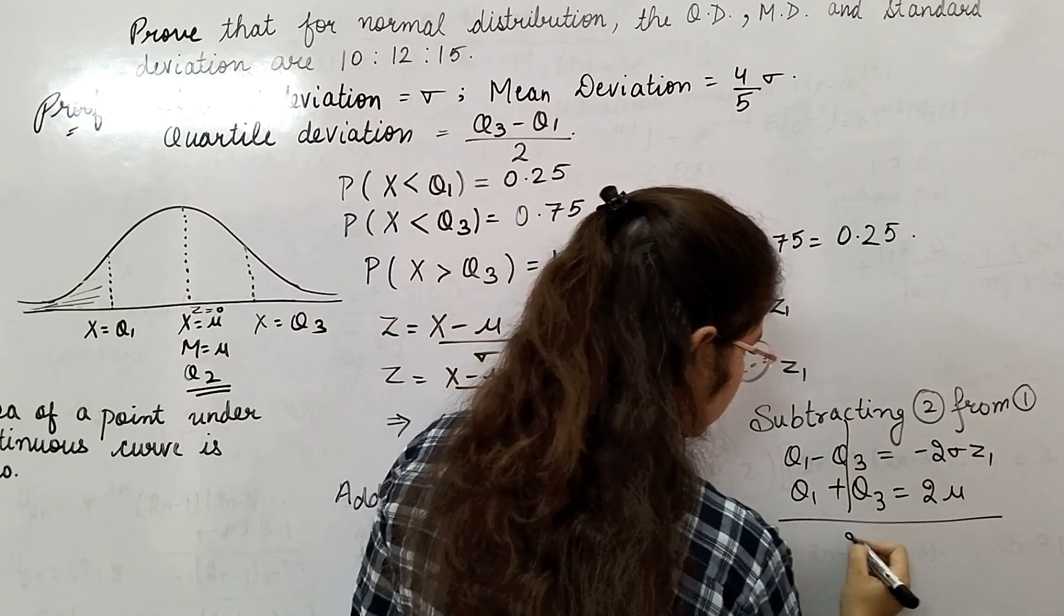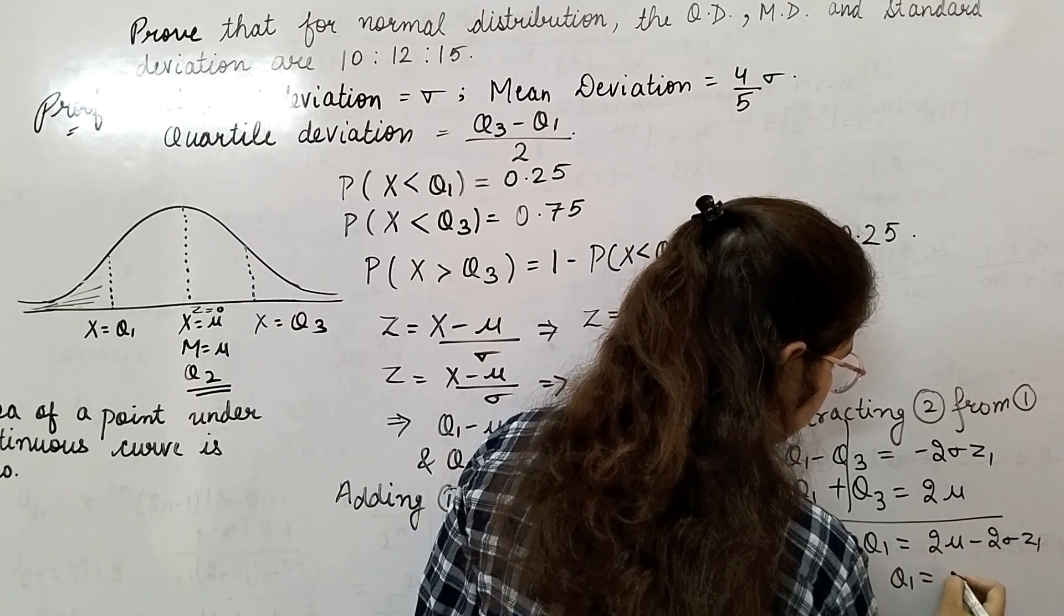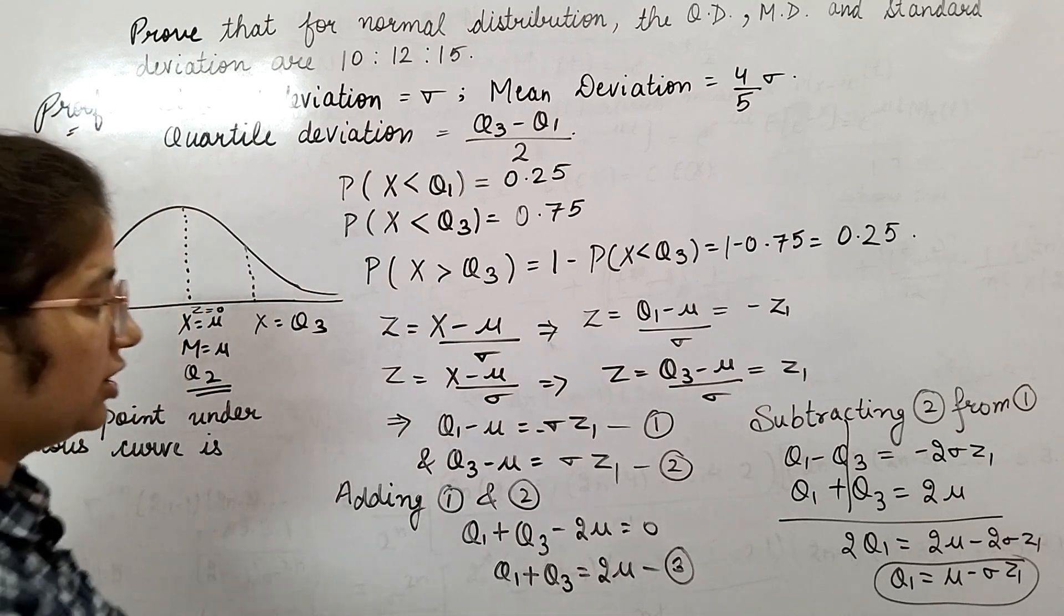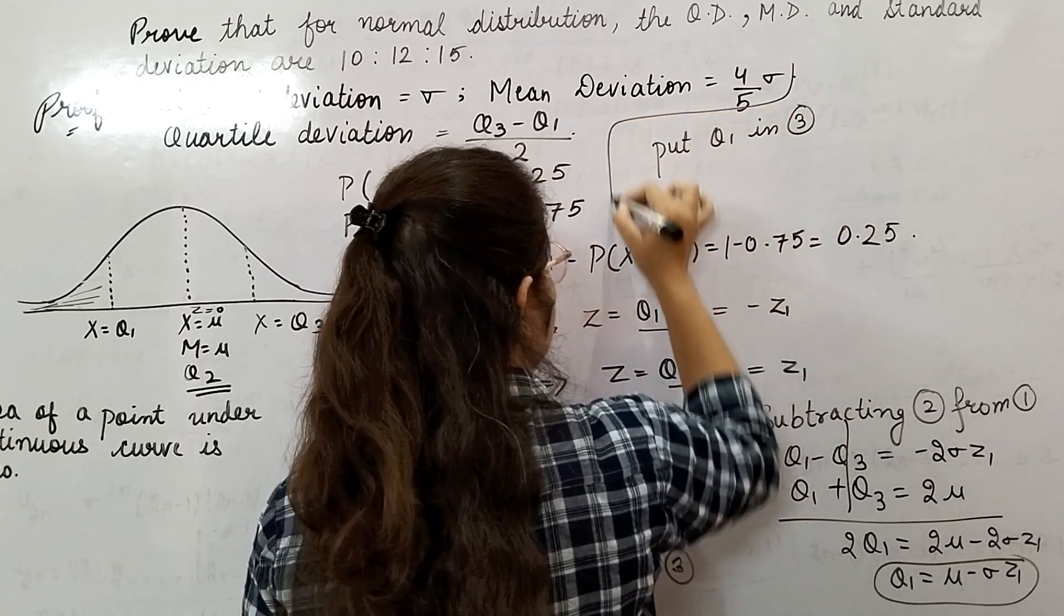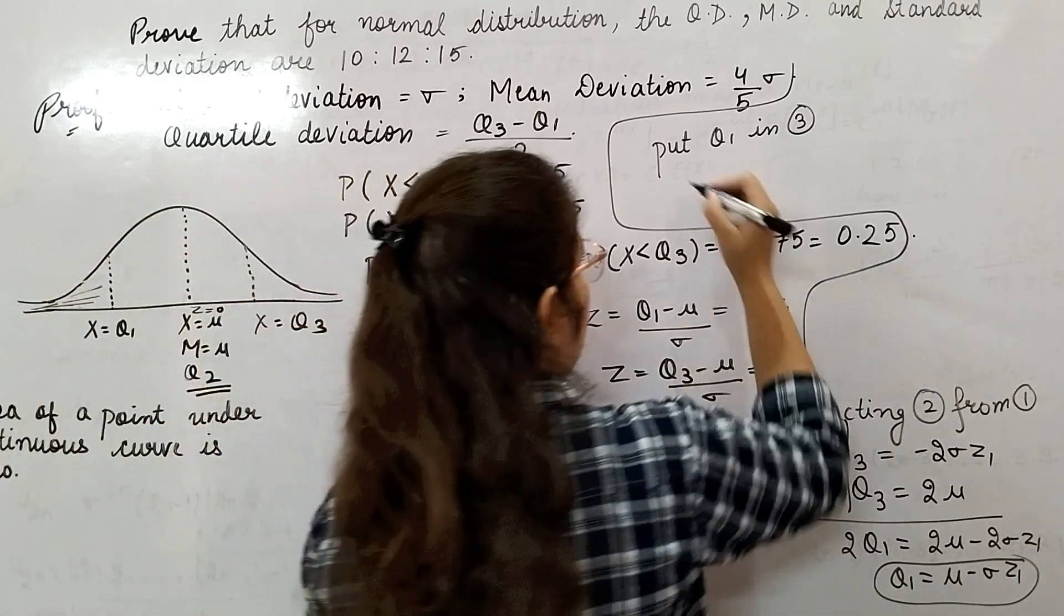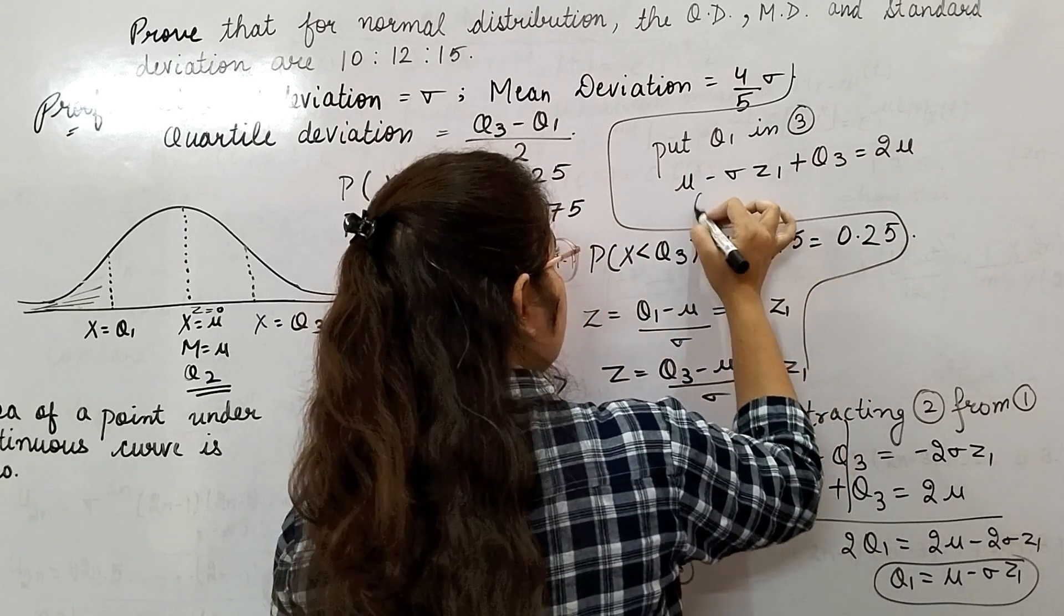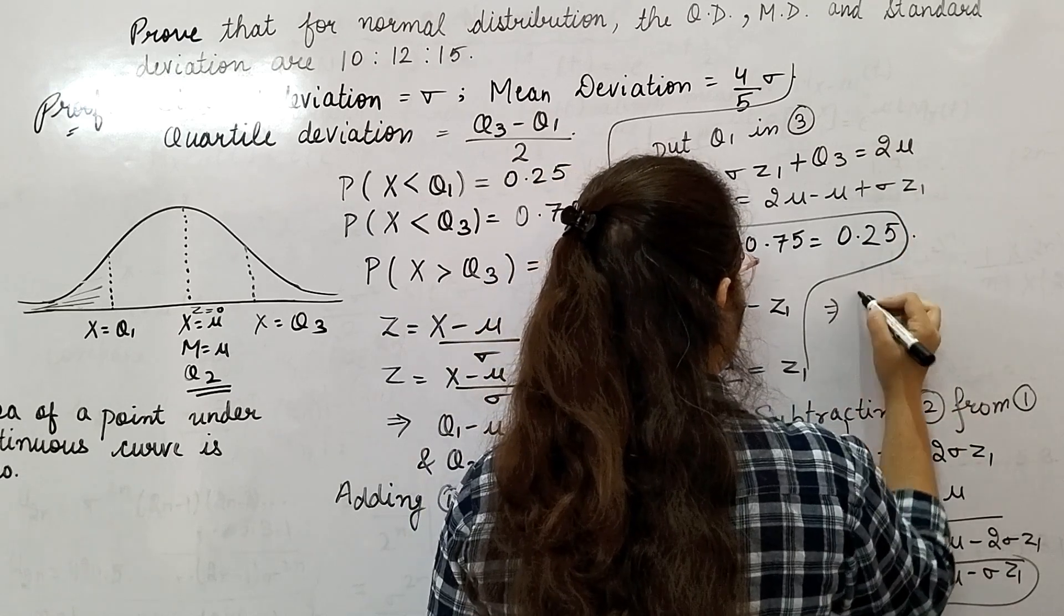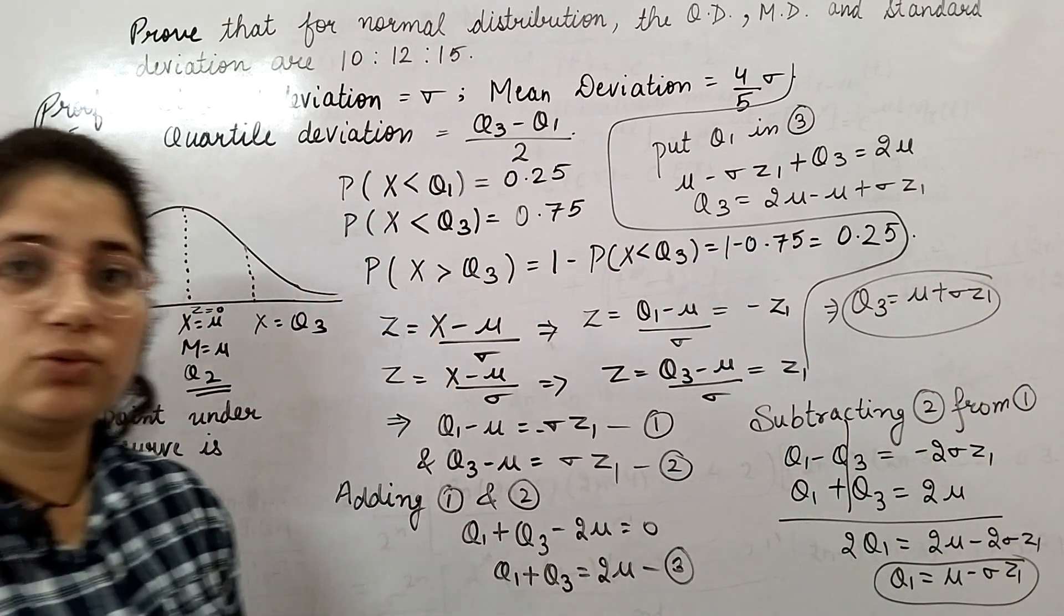From equation 3, q1 plus q3 equals 2 mu. Twice of q1 equals twice of mu minus twice of sigma z1. So from here, q1 is mu minus sigma z1. This is your q1 value. Now put this q1 in equation 3. From there, mu minus sigma z1 plus q3 equals 2 mu. Shifting to the right side, q3 is 2 mu minus mu plus sigma z1. This implies q3 is mu plus sigma z1. I calculated the values of q1 and q3.